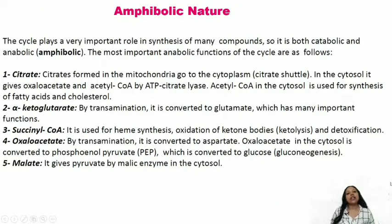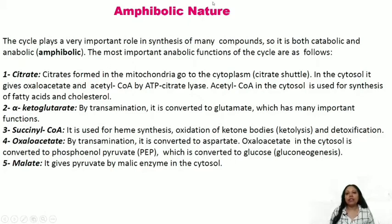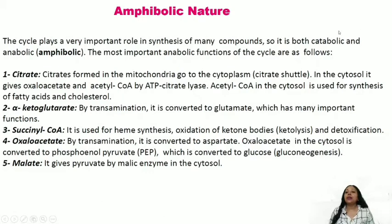On this basis, the citric acid cycle is known to have an amphibolic nature. 'Amphi' means both — in metabolism, it means both catabolism and anabolism. It is catabolic because glucose starting in glycolysis ultimately yields pyruvate, and when pyruvate undergoes the citric acid cycle, one molecule of glucose is completely oxidized into two molecules of CO₂. It is anabolic because it provides various biosynthetic precursors, as discussed.